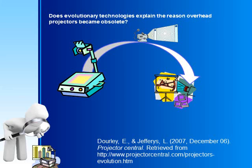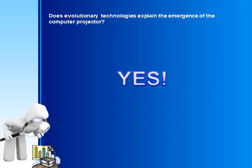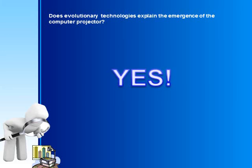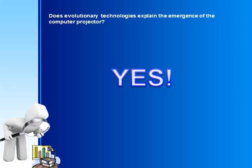Multimedia projector panels followed, allowing multimedia to be displayed. These were then followed by the computer projector. Evolutionary technologies explains the emergence of the computer projector. Without a doubt, evolutionary technologies is useful to explain the emergence of new technology that replaced the now obsolete overhead projector.